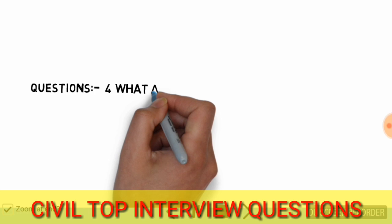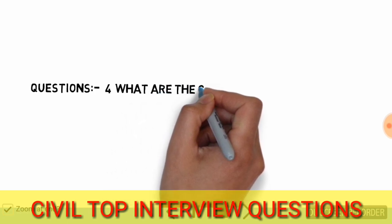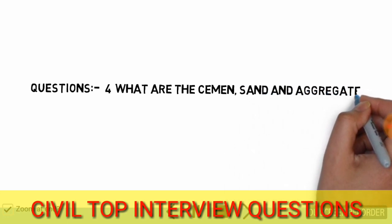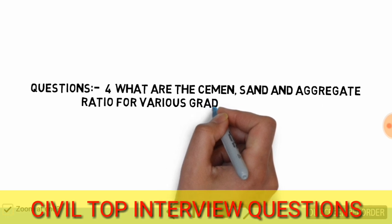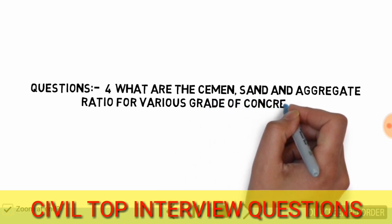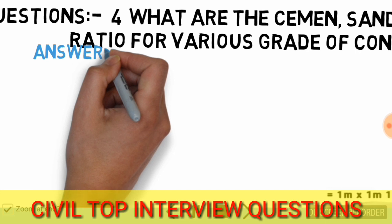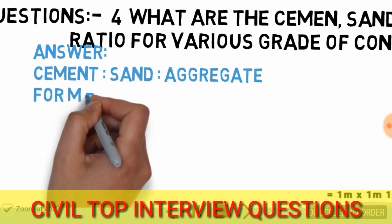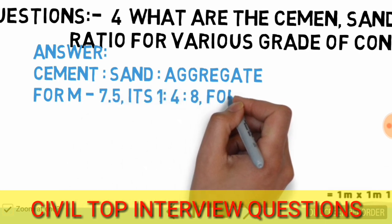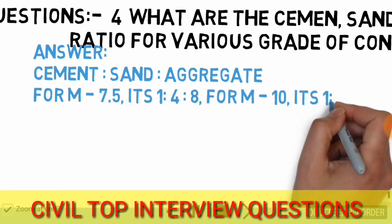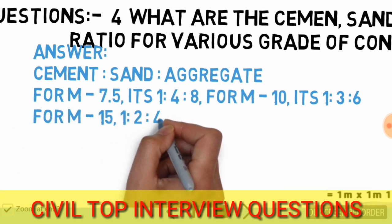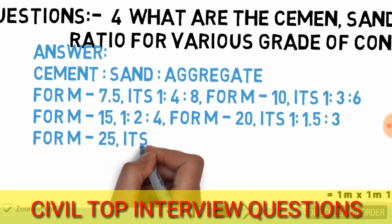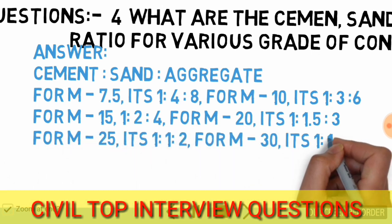Question number four: what are the cement, sand, and aggregate ratios for various grades of concrete? For M7.5 it is 1:4:8; for M10 it is 1:3:6; for M15 it is 1:2:4; for M20 it is 1:1.5:3; and for M25 it is 1:1:3.